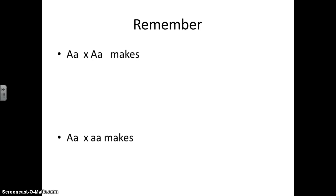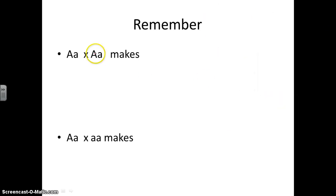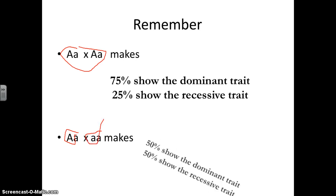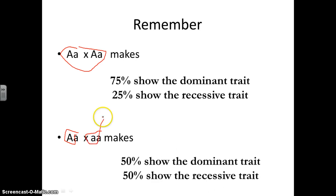Just as a reminder, these crosses are really, really important to remember. If you cross two organisms that are heterozygous for one trait, you're always going to get the same thing: 75% are going to show the dominant trait and 25% are going to show the recessive trait. That's important to remember. Now, if you cross an organism that is heterozygous for a trait with one that is homozygous recessive, you're always going to get a 50-50 ratio.